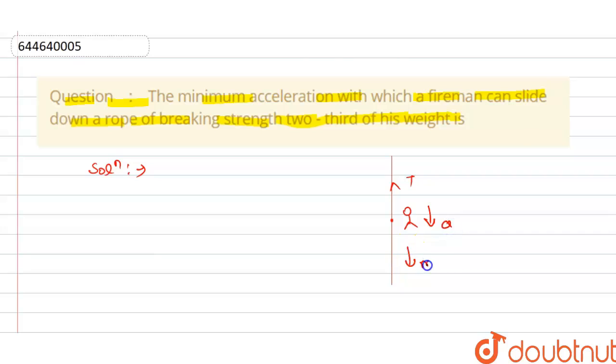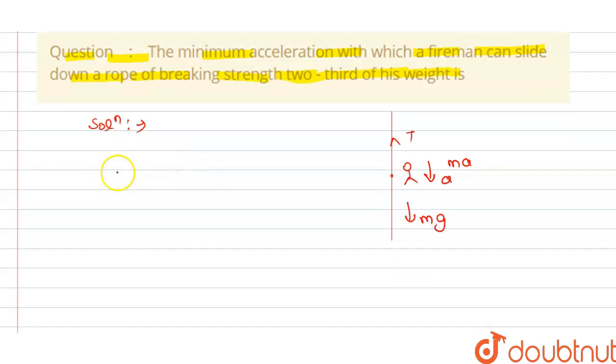So in this direction we have mg and ma. So from this we can say that if he slides down with some acceleration, his apparent weight decreases and minimum acceleration is equal to tension in rope.